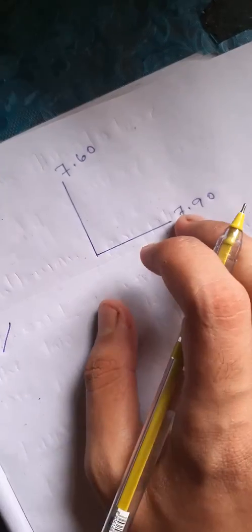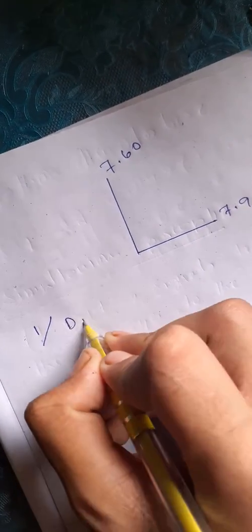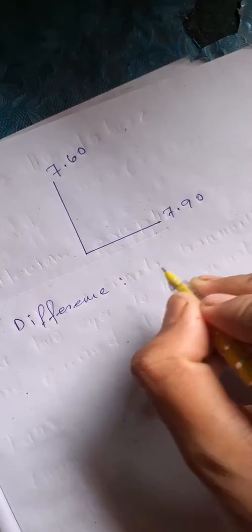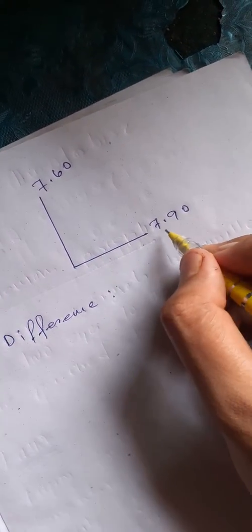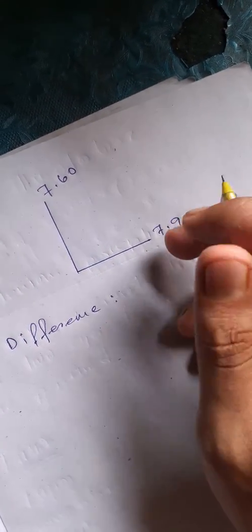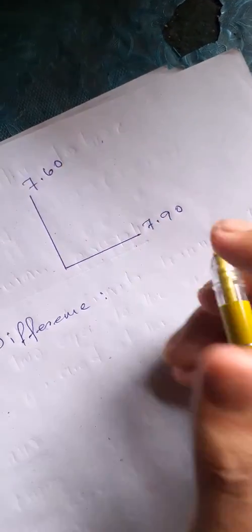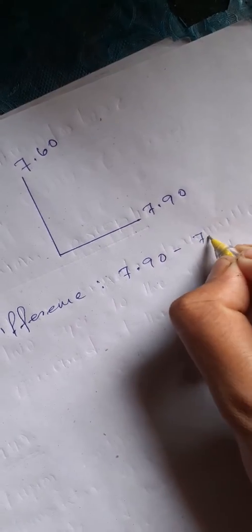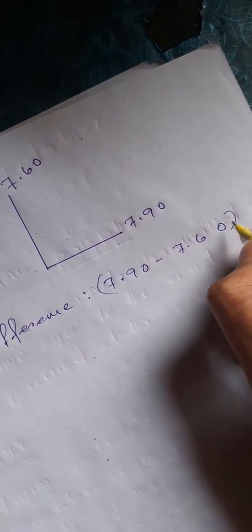The difference is the subtraction between these two values: 7.90 minus 7.60. The unit will be millimeter, so the answer is 0.30 millimeter.